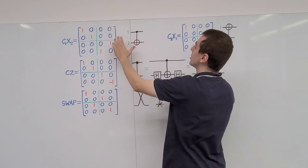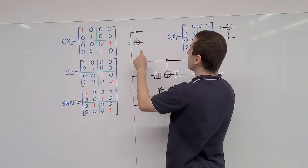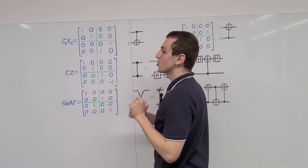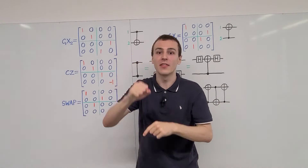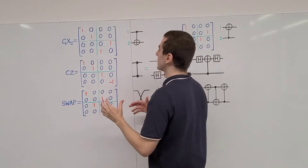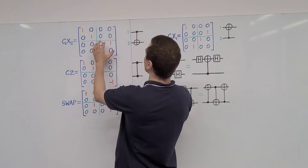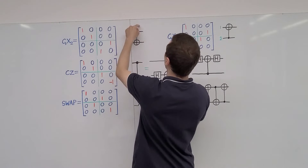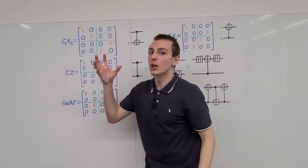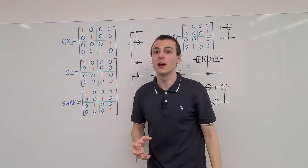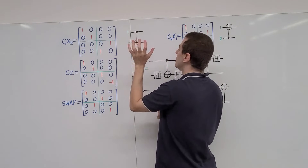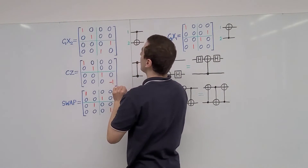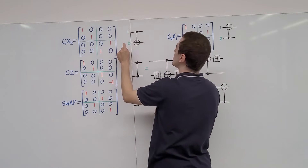This gate has the effect of a NOT gate dependent on the state of the control qubit — one qubit controls the action on another qubit. We can generalize this: instead of a Pauli X gate on the target, we could put a general unitary gate, applying that unitary to qubit two dependent on the state of the control qubit. The controlled NOT gate is very important in quantum information and can be used to construct many other useful gates.